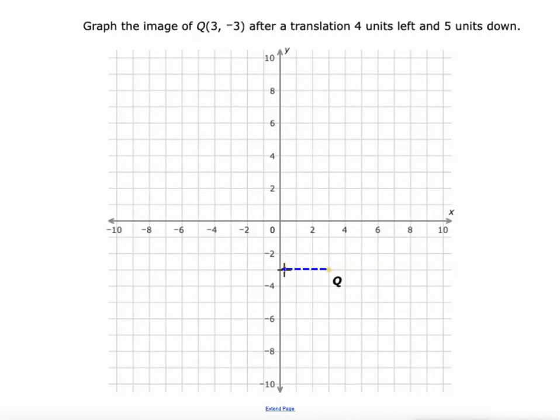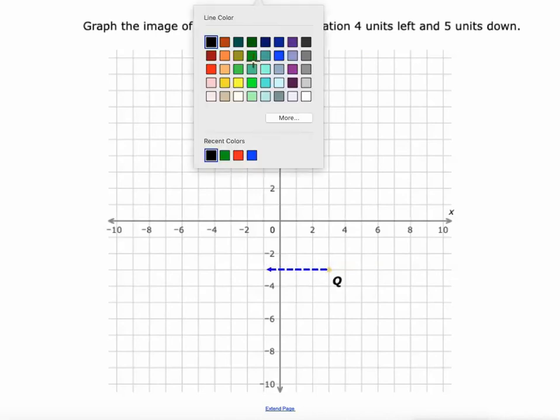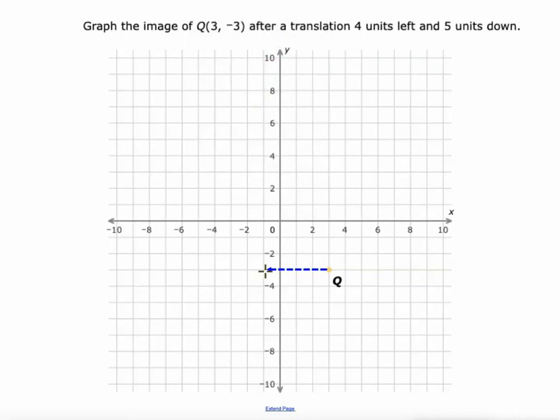1, 2, 3, 4. And then 5 down. 1, 2, 3, 4, 5. So that would be our new point. I'll do it in red. And its coordinates are negative 1, negative 8.